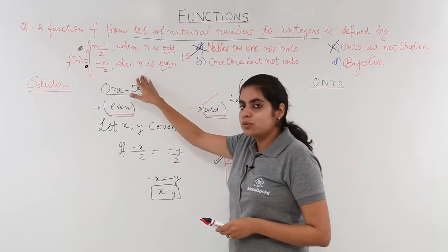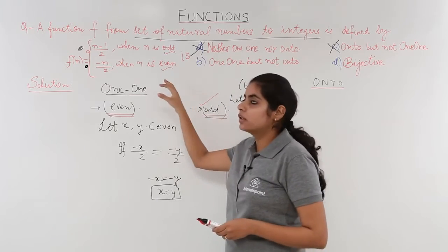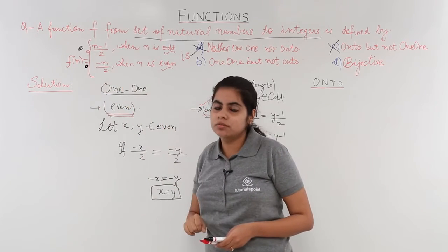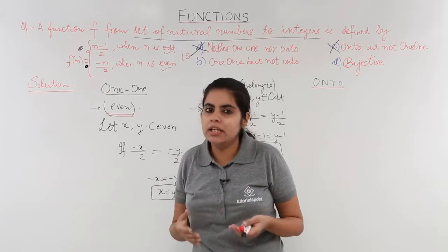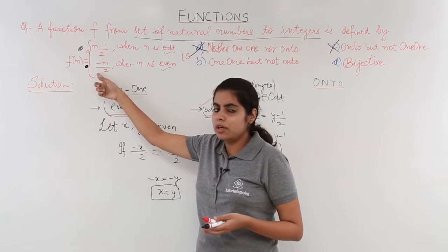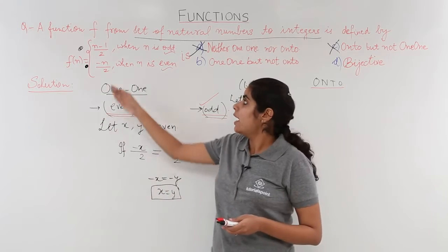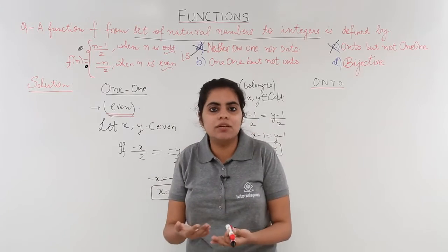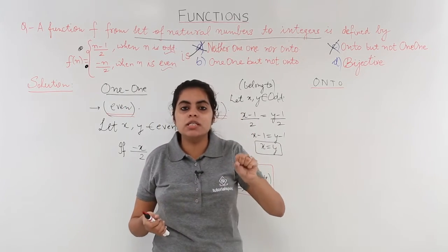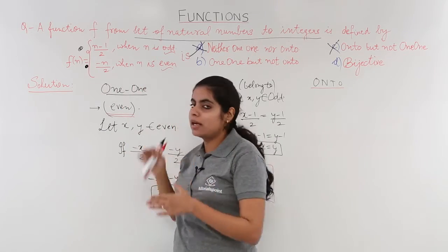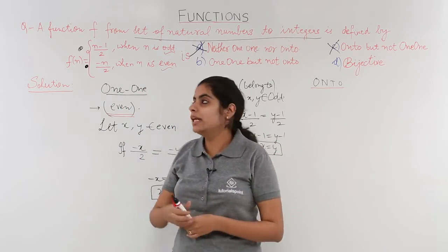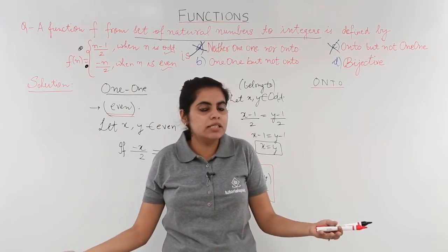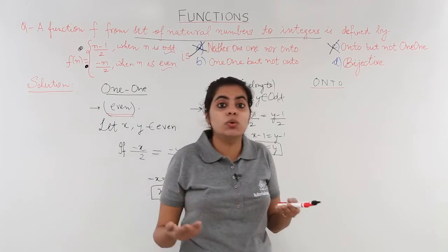Coming back to the question: the domain has two categories — odd and even — and the co-domain integers also split into two categories — negative and positive. Every negative integer is related to even natural numbers, and every positive integer is associated with odd natural numbers. That means everything in the co-domain is covered; nothing is left unassociated. So the function is onto.